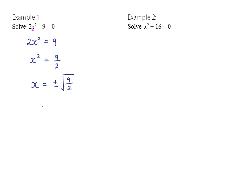You can leave it like that, or you could simplify it because the square root of 9 is 3, so it becomes 3 over root 2. You might also rationalize the denominator by multiplying both the top and the bottom by root 2. So all of these really are acceptable solutions to this equation.